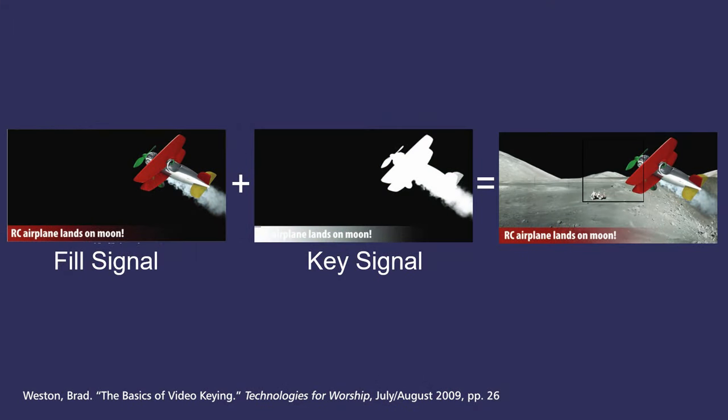The most complex and often useful method of downstream keying is called key and fill. Two video signals are sent to the switcher: the fill signal, which is the graphic itself, and the key signal, which is a black-and-white signal representing which parts of the fill should be keyed out (shown in black) and which parts should stay (shown in white). The key signal can also contain grayscale, resulting in partial transparency. This style of keying is necessary for complex graphics with partial transparencies and is employed by most modern character generators. Run your fill signal into the video input of your choice, and run the key signal into the DSK key in.